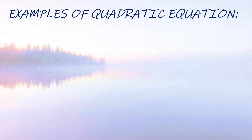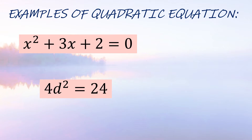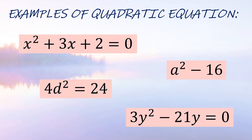Here are examples of quadratic equations. First: x² + 3x + 2 = 0. Second: 4d² = 24 — since there is no term with exponent one visible, the letter b in the standard form is zero. Next: a² = 60. And the last: 3y² − 21y = 0.